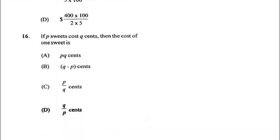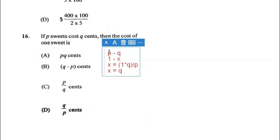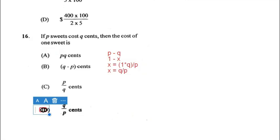Number sixteen: if P sweets cost Q cents, then the cost of one sweet is Q divided by P. Cross multiply to make x the subject: x equals 1 multiplied by Q, all divided by P, which gives Q over P. Therefore D is the answer for sixteen. Practically, if 10 sweets cost 30 cents, you divide 30 by 10 — substitute Q and P and you arrive at the same answer.